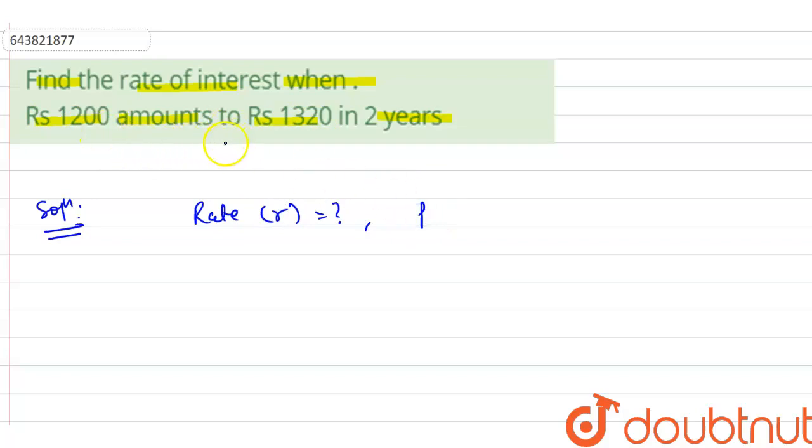Because it converts into amounts to 1320, so it is the principal. We can denote it by P, it will be equal to 1200 rupees. And amount A is equal to 1320 rupees.